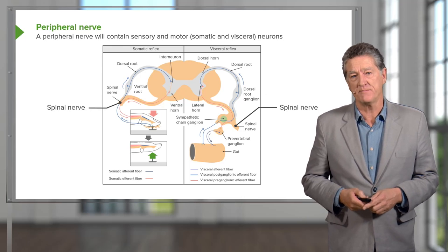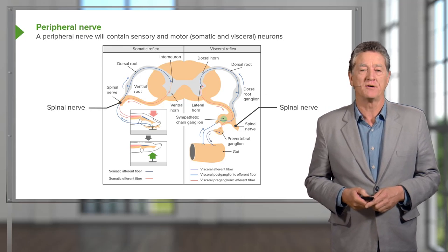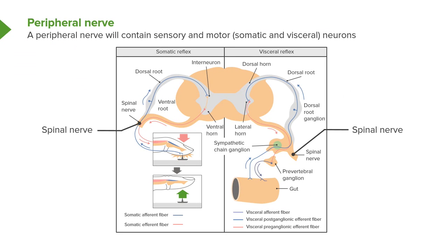In this diagram, a sympathetic pathway is shown. The post-ganglionic cell bodies are located in the pre-vertebral ganglion, but there is also the para-vertebral ganglion also indicated. In sympathetic pathways, the post-ganglionic cell is always located in one of these two ganglia, close to the spinal cord.